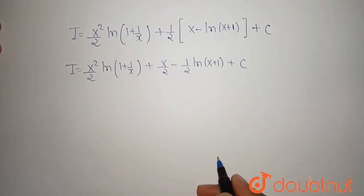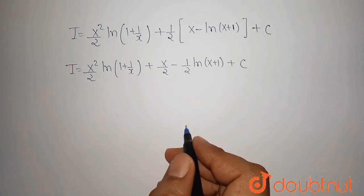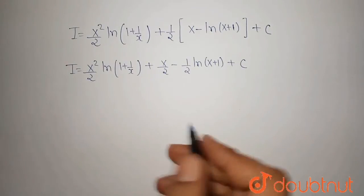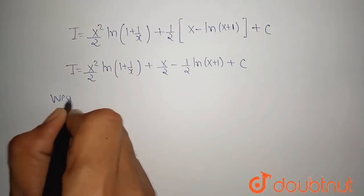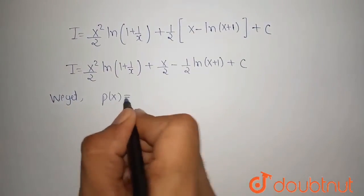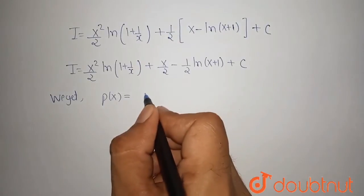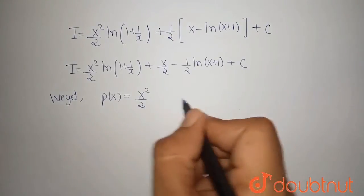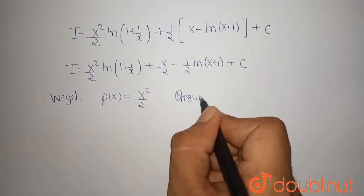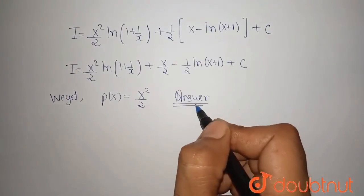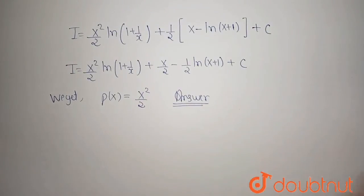This is our final answer. Now, comparing our answer with the given term, we get that p(x) is equal to x²/2. So, which option is true? Option A is true.